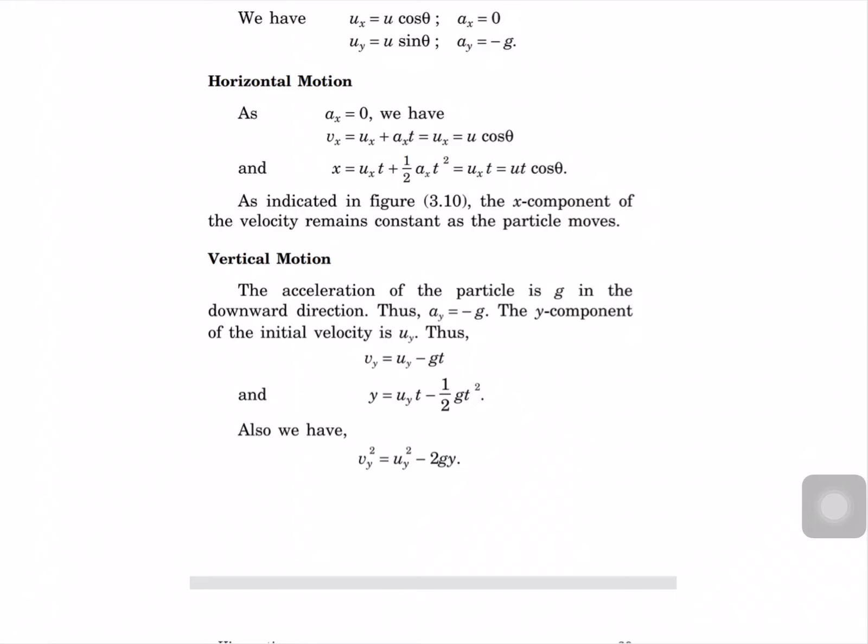For horizontal motion, acceleration in x is zero. Using v = u + at, we can write vx equal to U cos theta. And for displacement, x equal to U cos theta times t. For vertical motion, the acceleration of the particle is g in the downward direction, so a_y equal to minus g. The initial velocity in the y-axis is U sin theta.